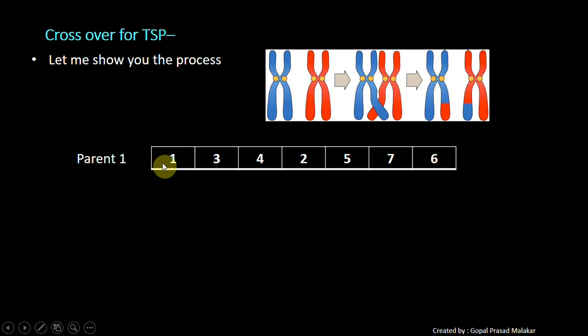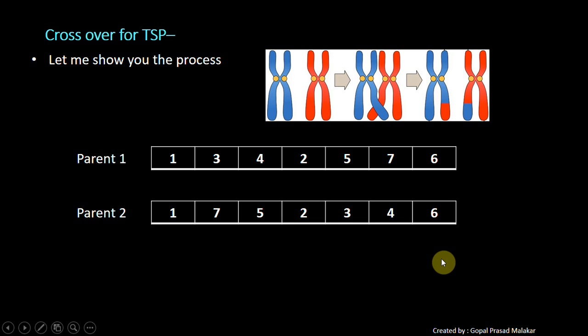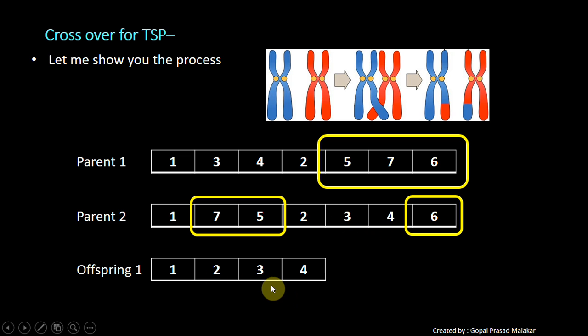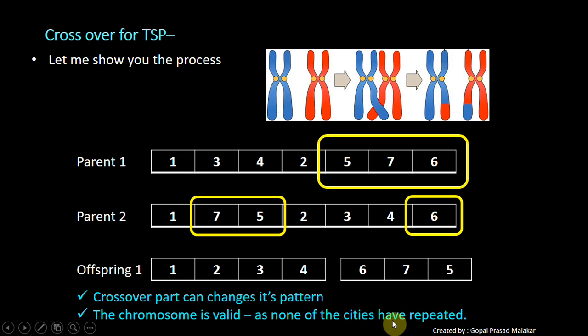Suppose this is one parent and this is another parent and you decided this portion to crossover. What do you do in the first go? You remove 5, 7, and 6 from the below chromosome. You remove them and shift them to one side. So you have 1, 2, 3, 4 here, and then you put 5, 7, 6 in any order like 6, 7, 5, and that has created a valid solution. Look at here, none of the city is getting repeated and crossover part can change its pattern. It is a valid chromosome.